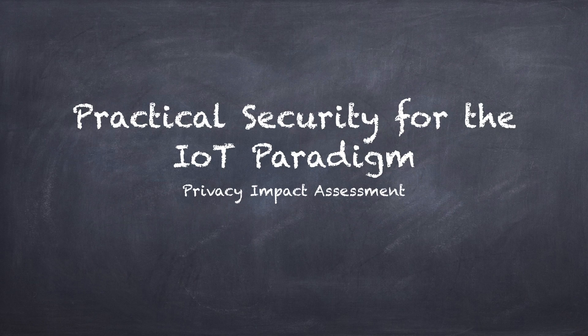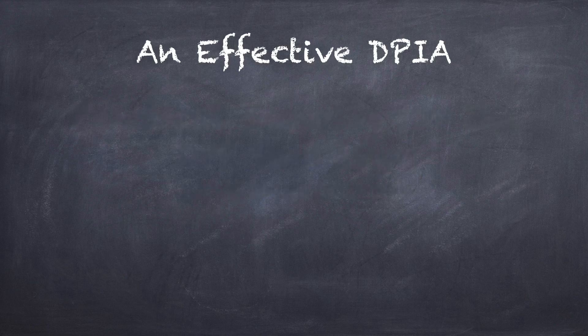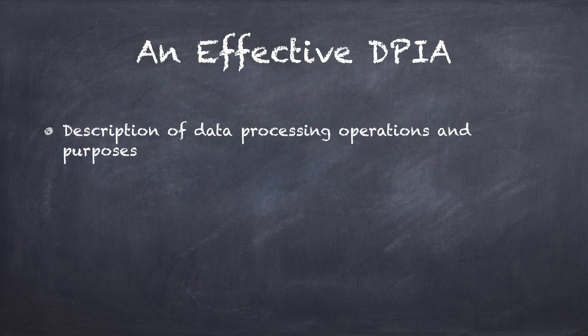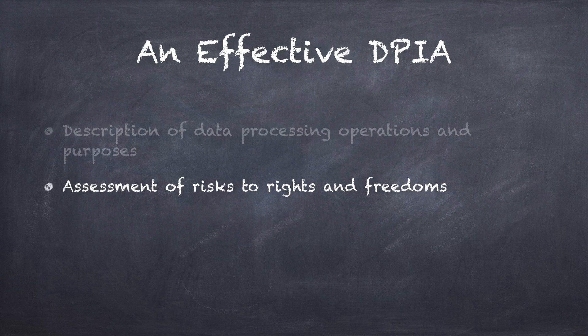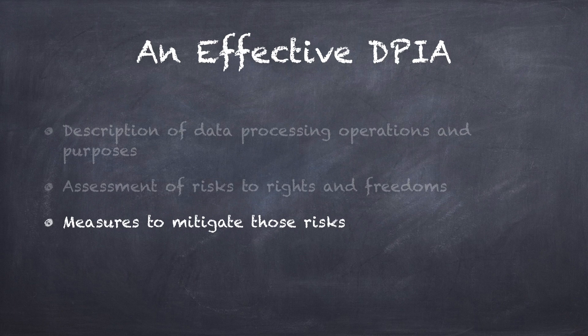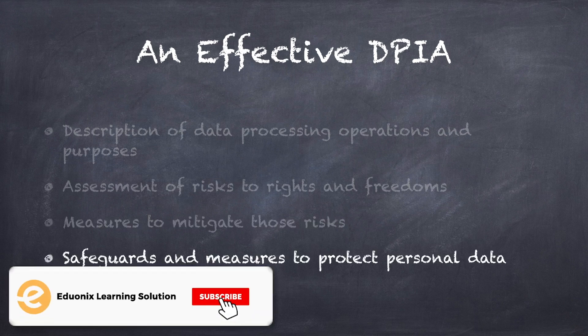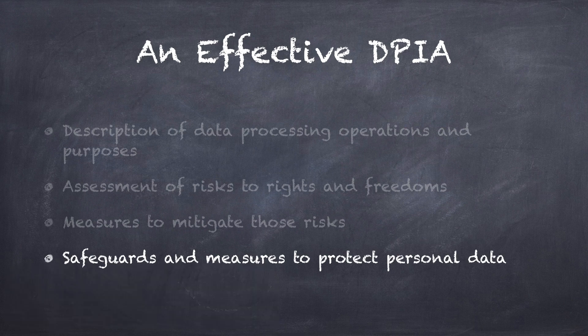In this segment, I will cover how to actually conduct a DPIA. An effective data privacy impact assessment must contain at least: a general description of your processing operations and their purposes; an assessment of the risks to the rights and freedoms of individuals; the measures envisaged to address those risks; and the safeguards, security measures, and mechanisms in place to ensure that you protect that personal data.